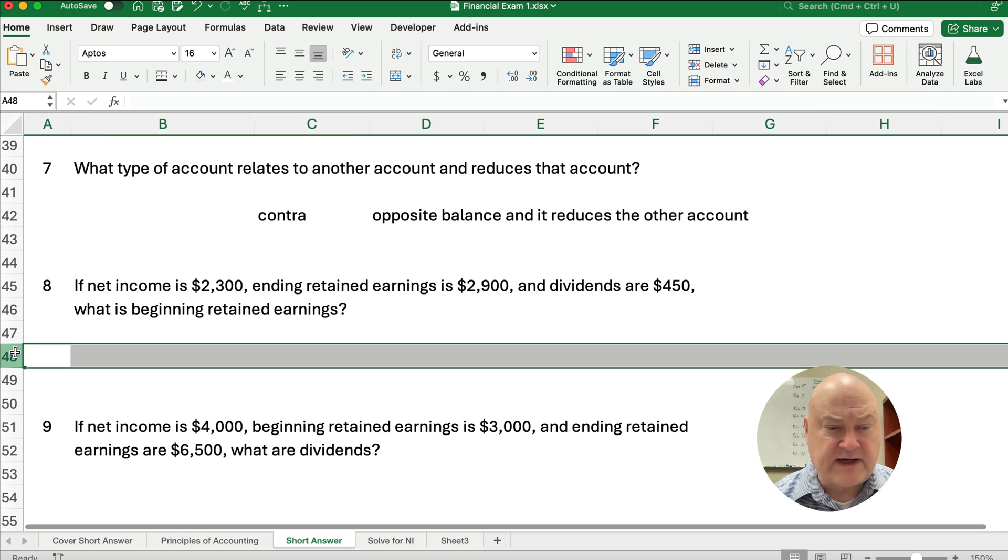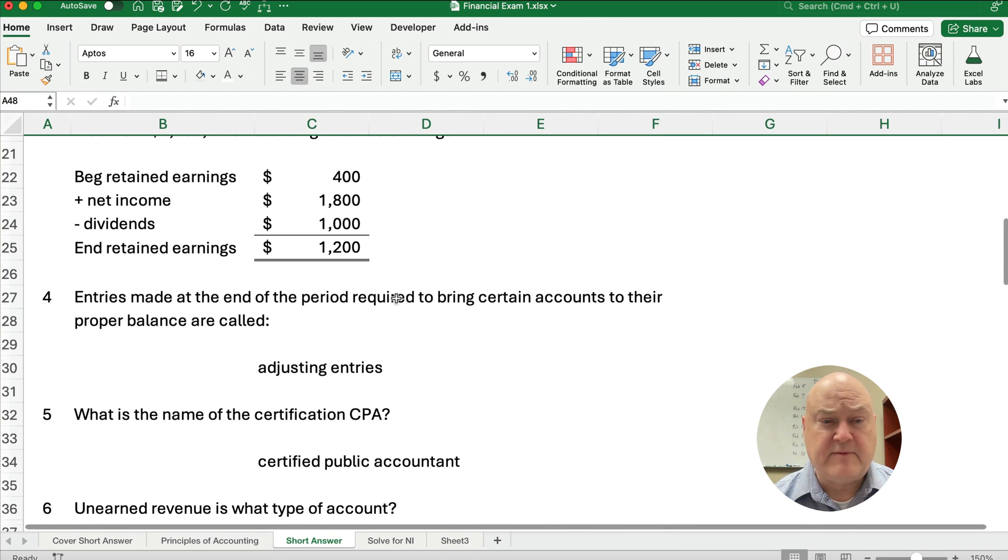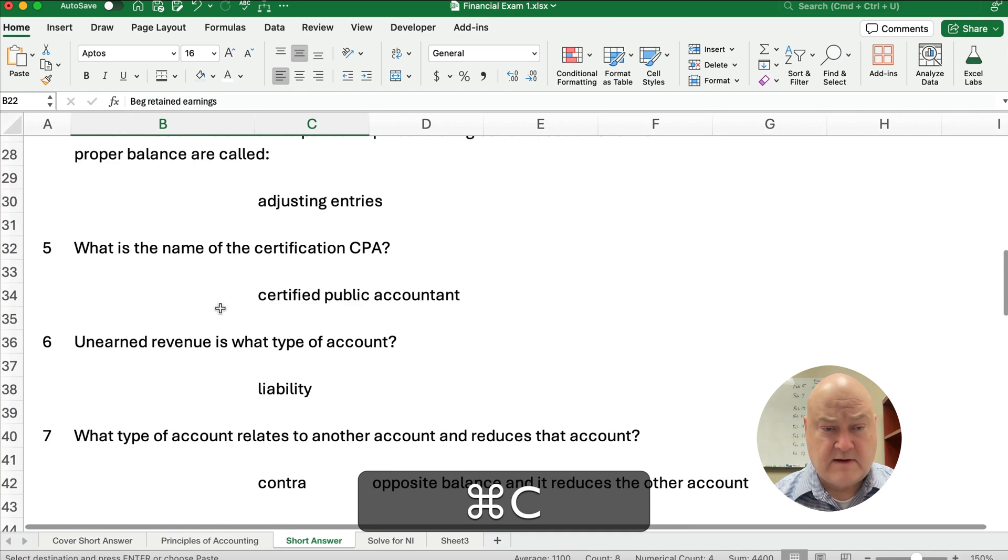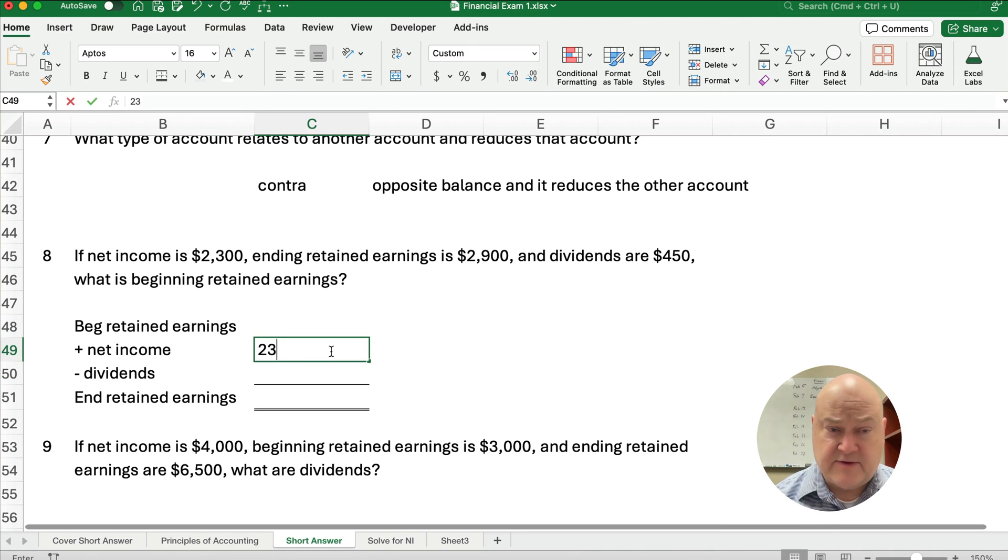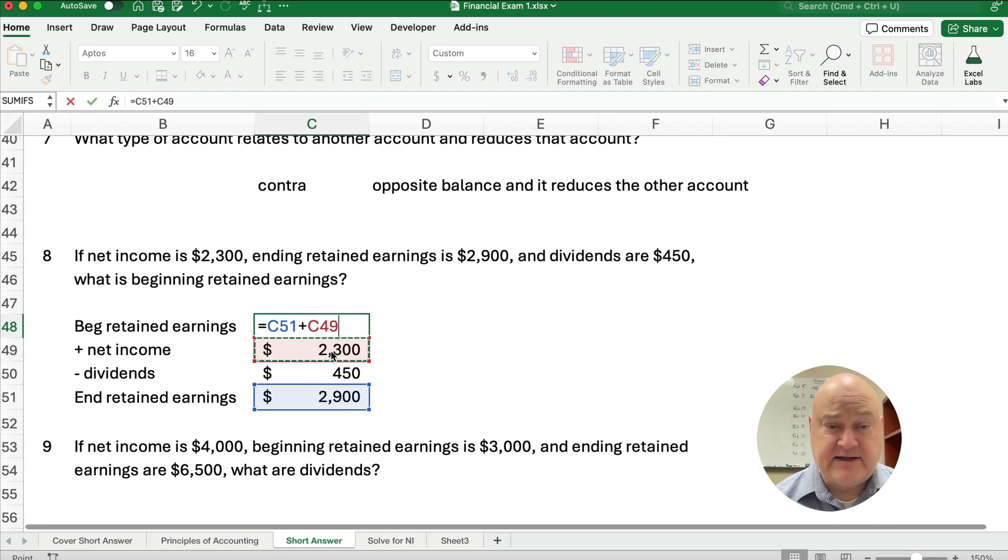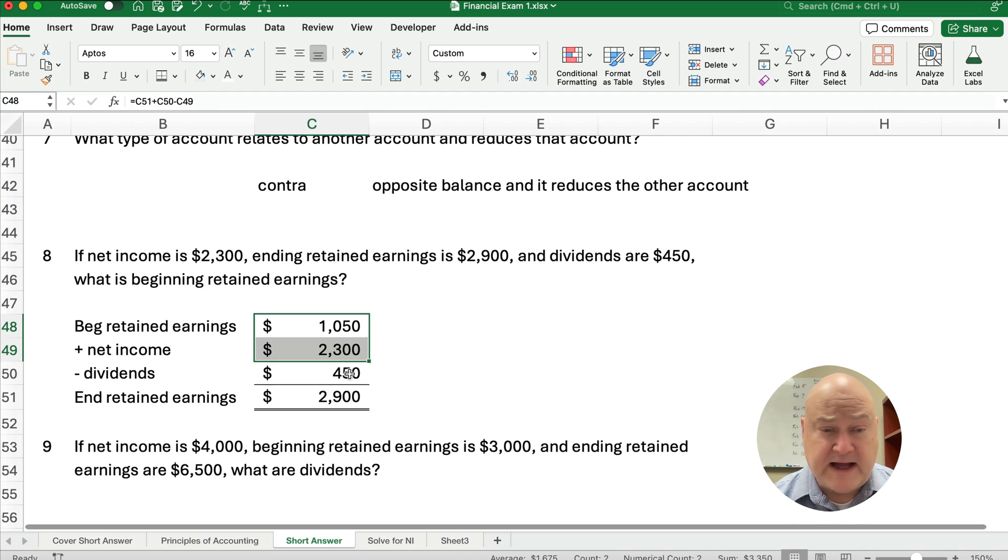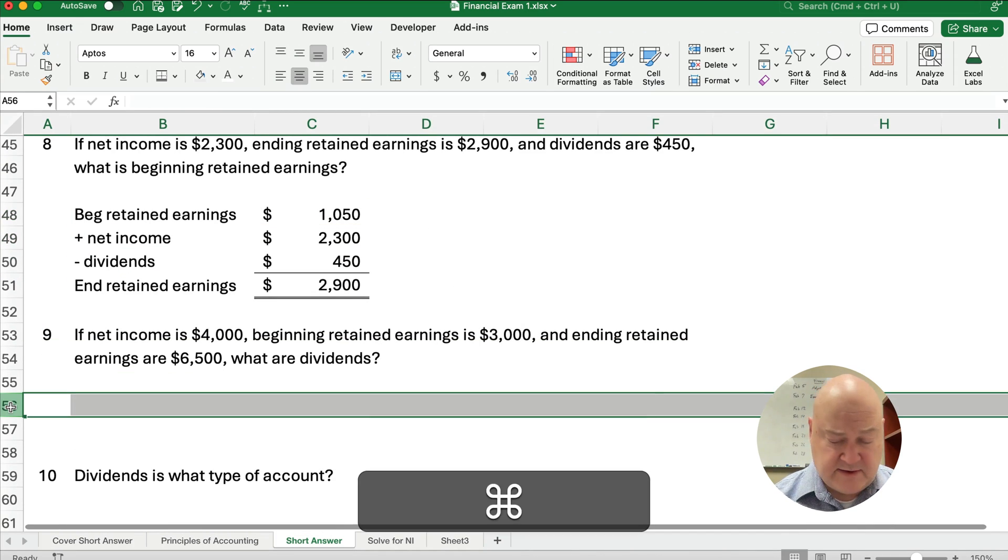We have another one where we're trying to calculate retained earnings. So let me copy my format from above. So what we have here is, if net income is $2,300, ending retained earnings is $2,900, dividends are $450, then what is our beginning retained earnings? We'll just work backwards. We start with the ending, we're going to add the dividends because normally we subtract, but we're going to subtract the net income because we're working backwards. So it looks like the answer is $1,050.